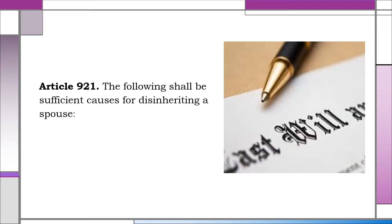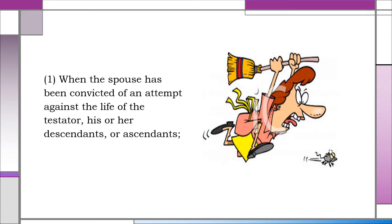Article 921: the following shall be sufficient causes for disinheriting a spouse. Number one, when the spouse has been convicted of an attempt against the life of the testator, his or her descendants, or ascendants. This cause is common with Articles 919 and 920, and had been discussed under those articles.